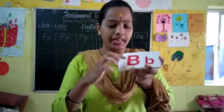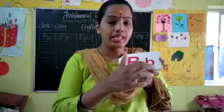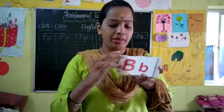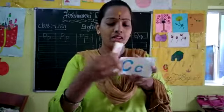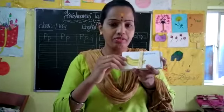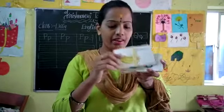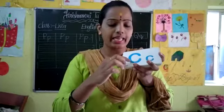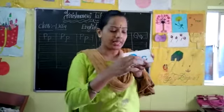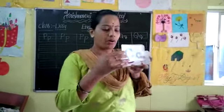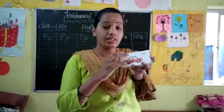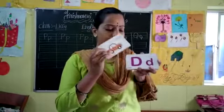And the next letter is B. Capital B, small b. B for banana — see here, banana is there. And next letter is C. Capital C, small c. And the object is C for car. C for car.